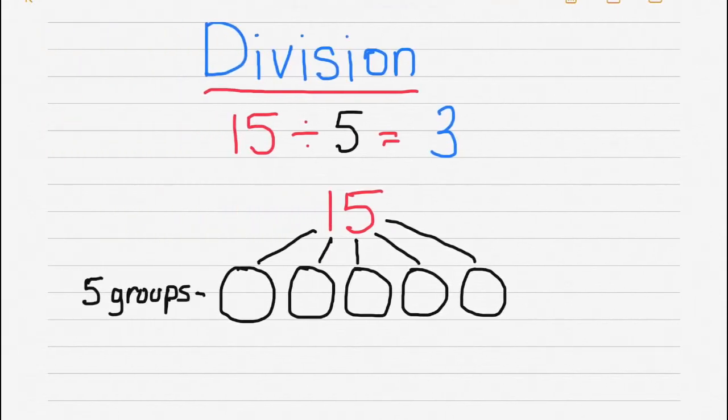So let's take a look at this equation. 15 divided by 5 equals 3. 15 represents my total quantity, and I want to divide it amongst 5 groups. So each group would get 3 pieces of candy if that's what my total was.